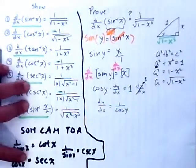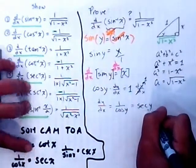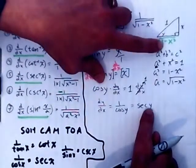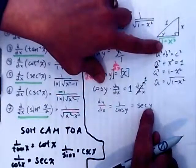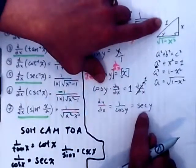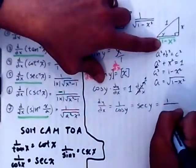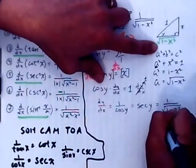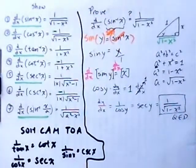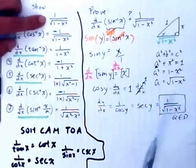We know that cosine is the reciprocal function for the secant, so that becomes the secant of y. Now we reference the triangle: the secant is hypotenuse over adjacent, so the ratio of the hypotenuse over the adjacent is 1 over the square root of 1 minus x squared. QED — quod erat demonstrandum. I have demonstrated that the derivative of the sine inverse is equal to 1 over the square root of 1 minus x squared.